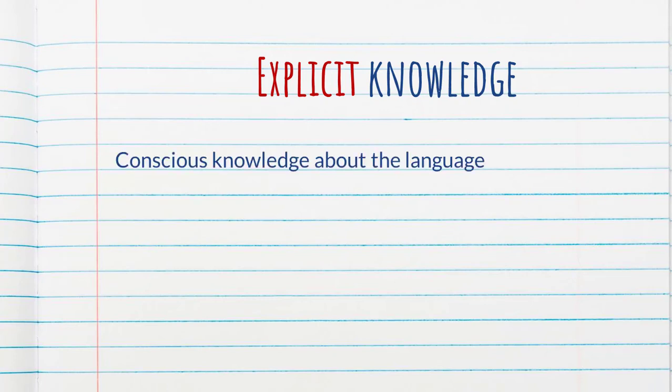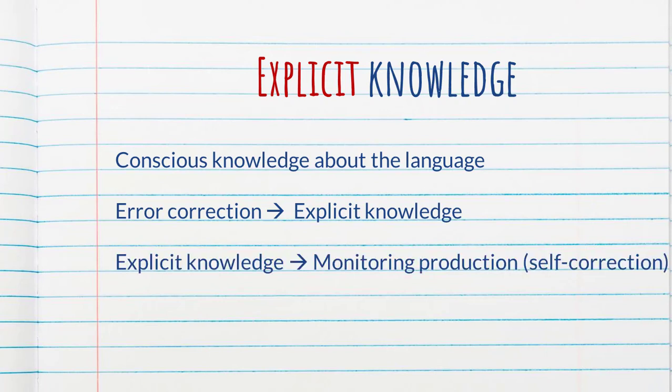So explicit knowledge is this conscious knowledge about the language. And we can all probably agree that error correction contributes to explicit knowledge. Another thing that we can all probably agree with is that explicit knowledge can help learners in terms of monitoring production.